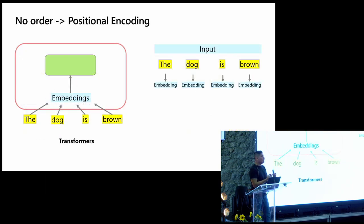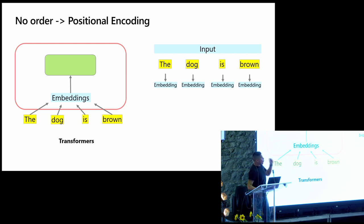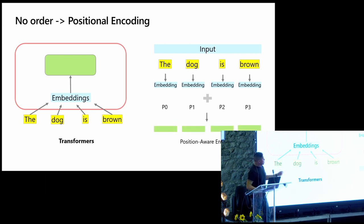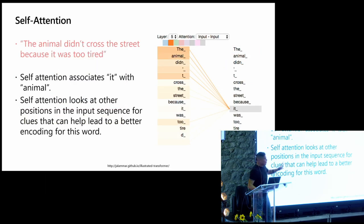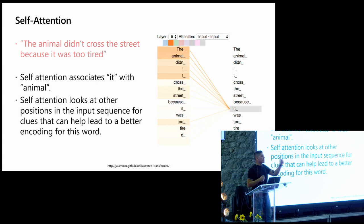When you pass everything at once, you lose position of the word. When you pass one word at a time you could track first word, second word, third word. Transformers brought positional encoding — you have the embeddings of the words plus where they need to be, creating position-aware encoding. Self-attention: when you have a sequence of words, you can understand how one word is related to the rest and how strong those relationships are. Transformers do that on their own.